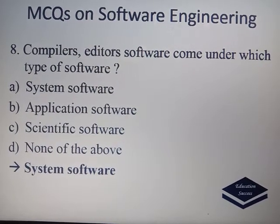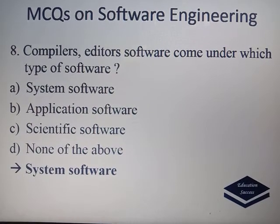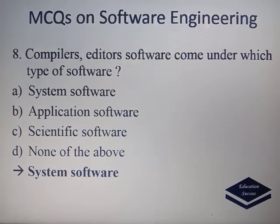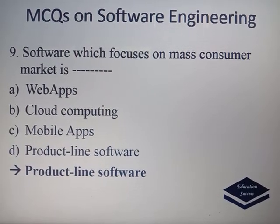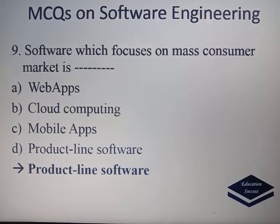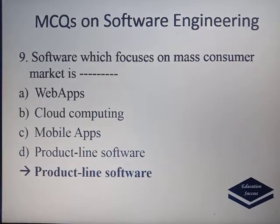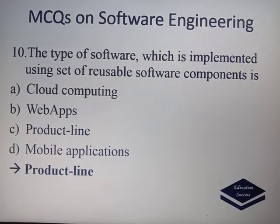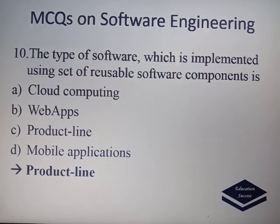Compiler and Editor come under which type of Software? Software which focuses on a mass consumer market is known as Product Line Software. A type of software which is implemented using a set of reusable software components is also called Product Line.